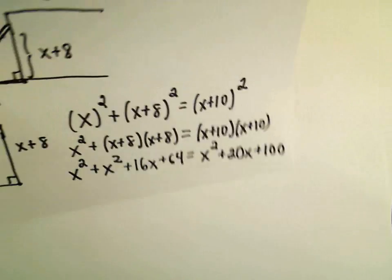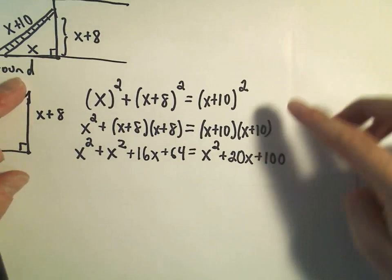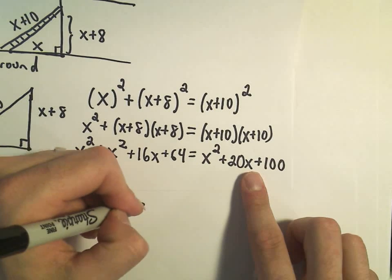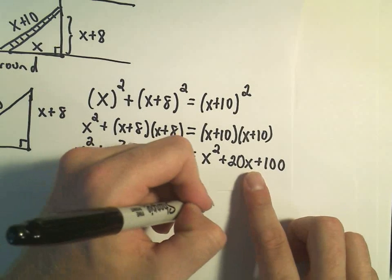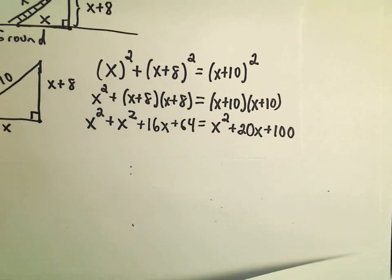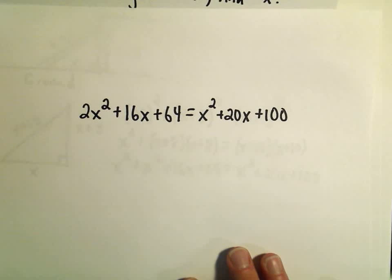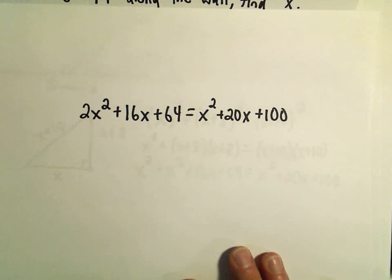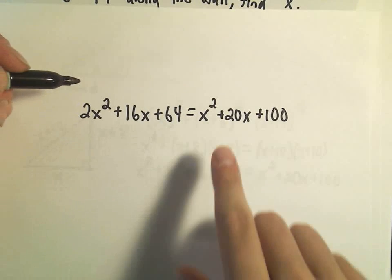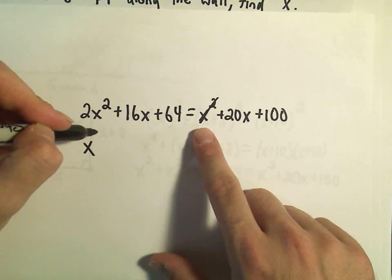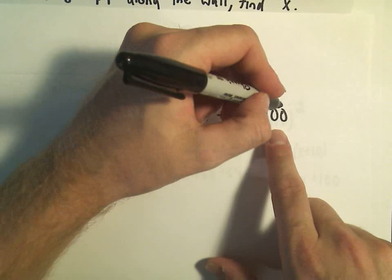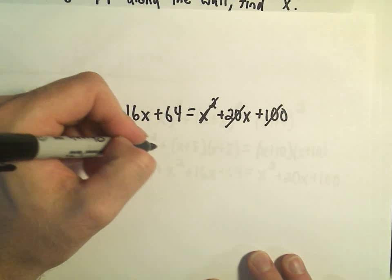So there's a little bit of simplification we still have to do. On the left side we have x squared plus x squared, which is 2x squared, plus 16x, plus 64. On the right side we have x squared plus 20x plus 100. This is a quadratic equation — I know how to solve quadratic equations: make one side equal to zero, and either try to factor or use the quadratic formula. I like the coefficient on x squared to be positive, so I'm going to make the right side equal to zero. Subtracting x squared gives 1x squared, subtracting 20x gives negative 4x, and subtracting 100 gives negative 36.